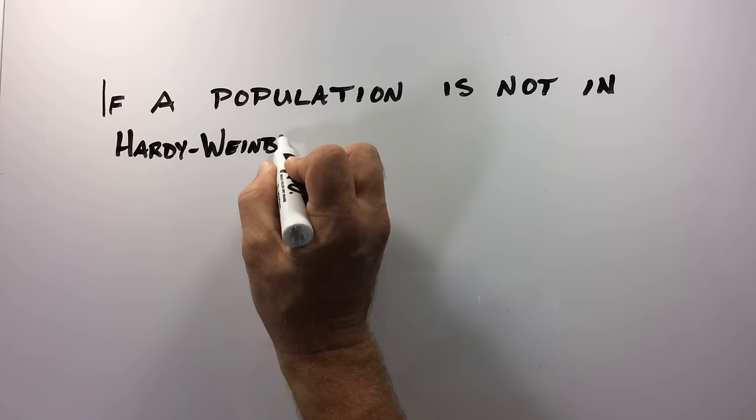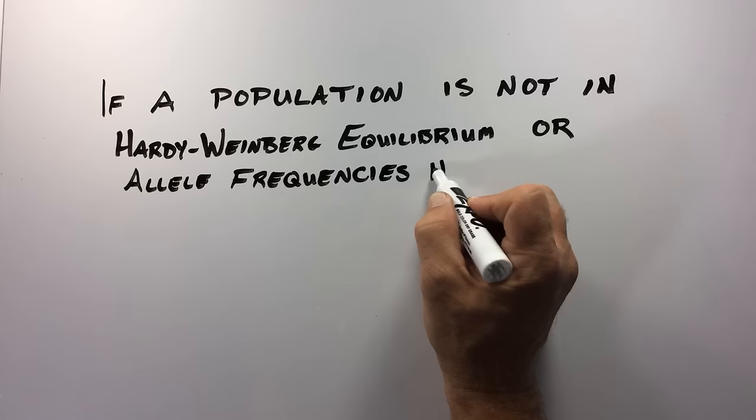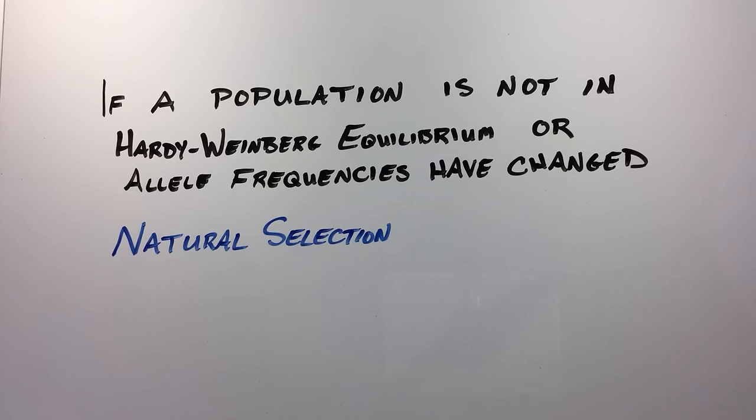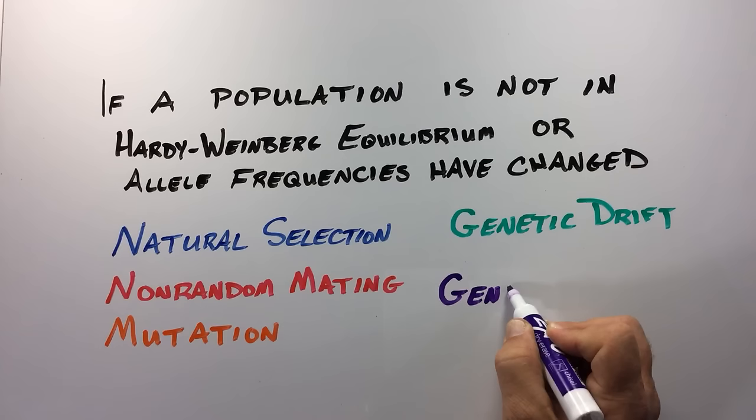If you are studying a population and you find that it is not in Hardy-Weinberg equilibrium, this means that it has been subject to one of five different evolutionary forces, such as natural selection, non-random mating, mutation, genetic drift, or gene flow.